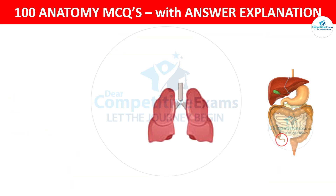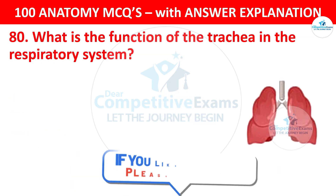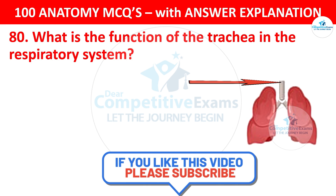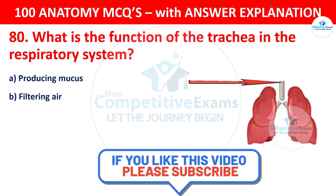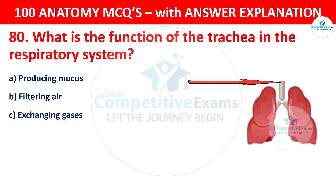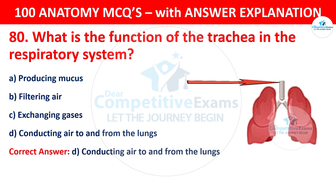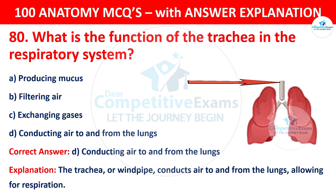Question number 80: What is the function of the trachea in the respiratory system? The options are: Producing mucus; Filtering air; Exchanging gases; or Conducting air to and from the lungs. The correct answer is D — conducting air to and from the lungs. The trachea, or windpipe, conducts air to and from the lungs, allowing respiration.